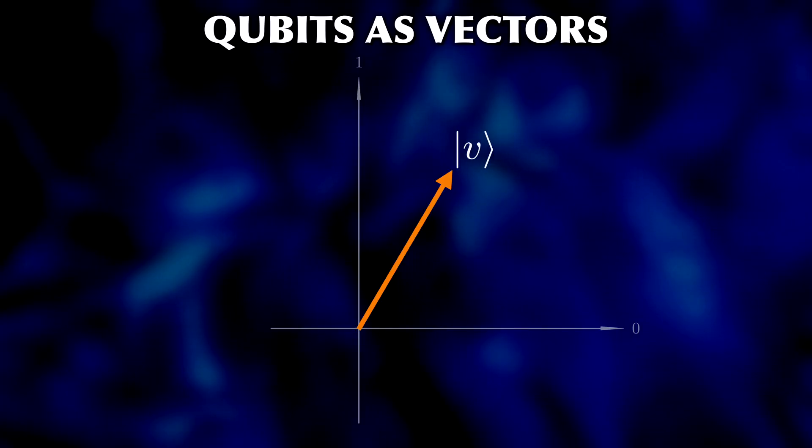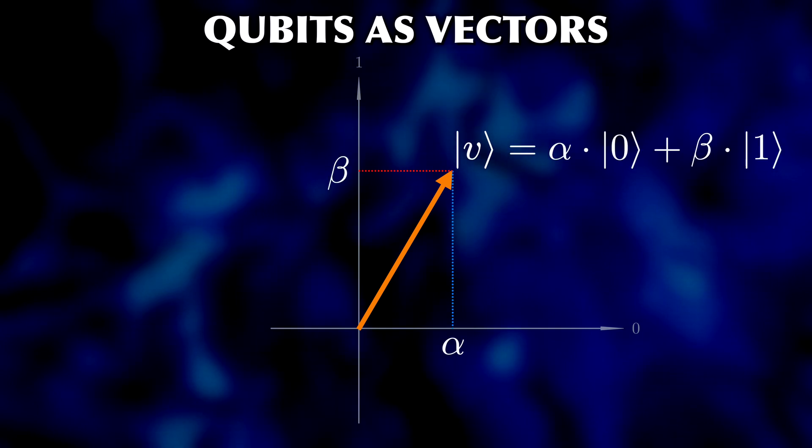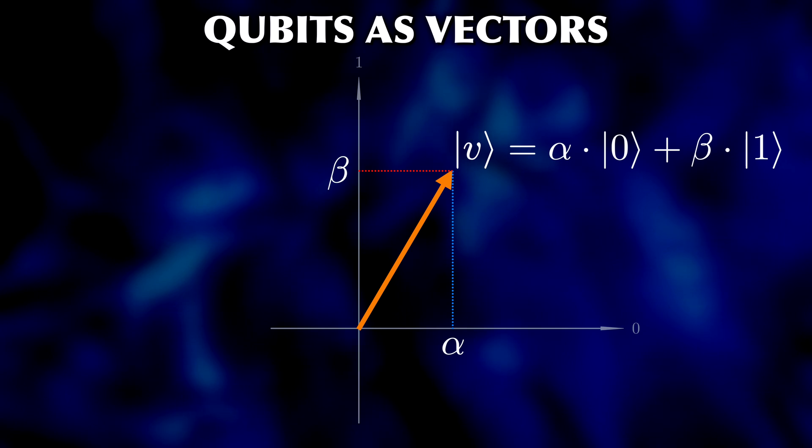One of the things we learned there is that a quantum state can be visualized as a vector with two components. So a single qubit holds two bits of information. And this is cool, but it gets even better.